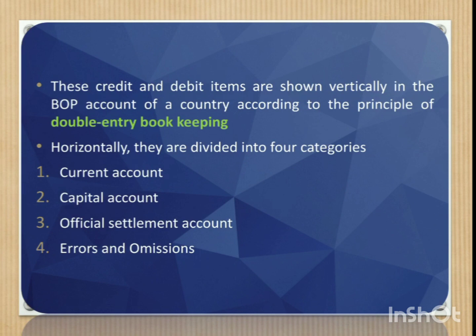According to the principle of double entry bookkeeping, and horizontally, they are divided into four categories: current account, capital account, official settlement account, and errors and omissions.